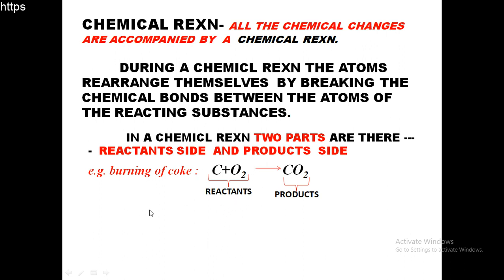In a chemical reaction there are two sides - the left side and the right-hand side. When a chemical reaction takes place, it results in the formation of a new substance. For example, carbon plus oxygen to carbon dioxide. This new substance formed is called a product, and the substances which take part in this reaction are called reactants. The substances on the left-hand side are called reactants, and the new substances formed on the right-hand side are called products.